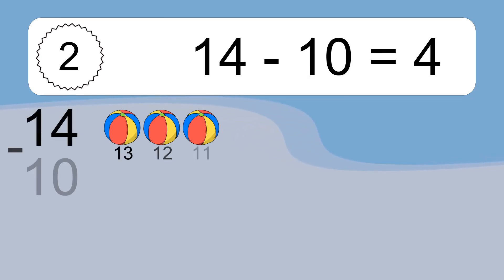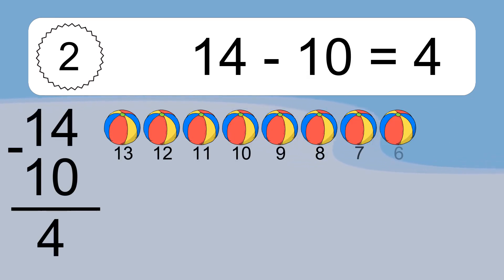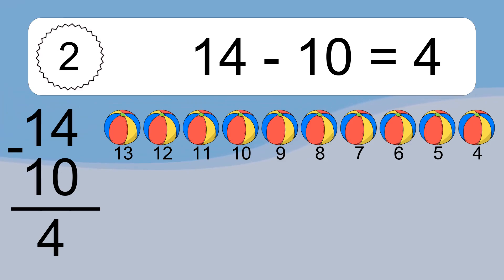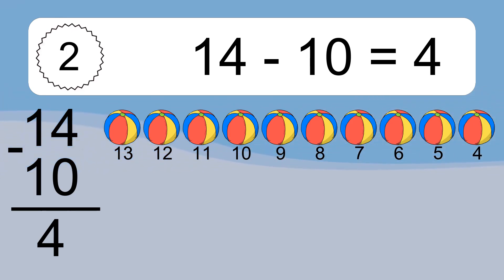14 minus 10 equals what? 14 minus 10 equals 4. Let's count it! 13, 12, 11, 10, 9, 8, 7, 6, 5, 4.